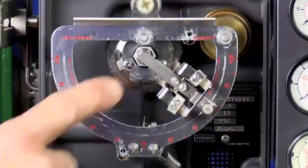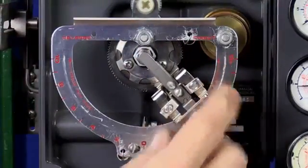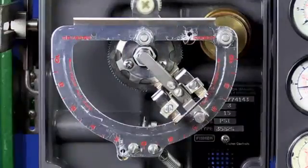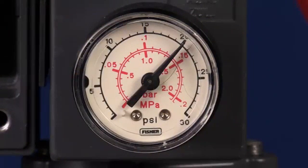The zero adjustment is done with the nozzle. And the span is adjusted by moving the flapper assembly along the summing beam. We, of course, have our air supply plumbed to the positioner and can see on the supply gauge the regulator is set to, in this case, 20 psi.